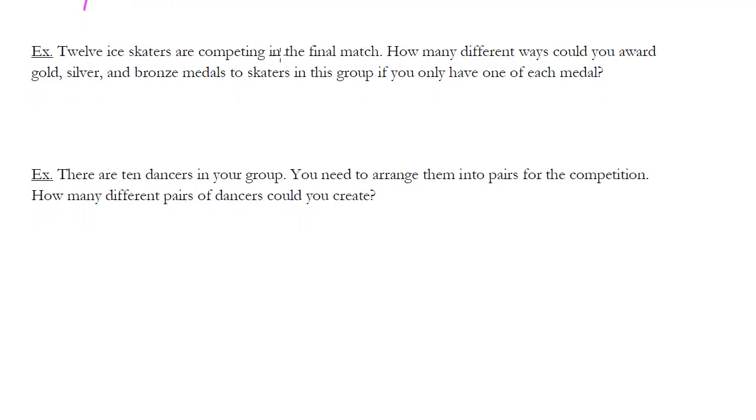Twelve ice skaters are competing in the final match. How many different ways could you award gold, silver, and bronze medals to skaters in this group if you only have one of each medal? So we're assuming here we're just randomly giving out gold, silver, and bronze. So in theory we could say well I've got twelve ice skaters, so ice skater one, two, three, all the way up to twelve. And then I could do one, two, three, one, two, four, one, two, five, one, two, six, right? Hundreds, I don't know how many combinations there are, but we'll find out in a second. Just so many different orders it's going to be crazy. So let's not list them out because that's going to be impossible.